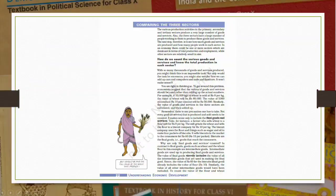Come to page 22, comparing the three sectors, last paragraph: Why are only final goods and services counted? In contrast to final goods, goods such as wheat and wheat flour in this example are intermediate goods. Intermediate goods are used up in producing final goods and services. The value of the final good already includes the value of all the intermediate goods that are used in making the final good.